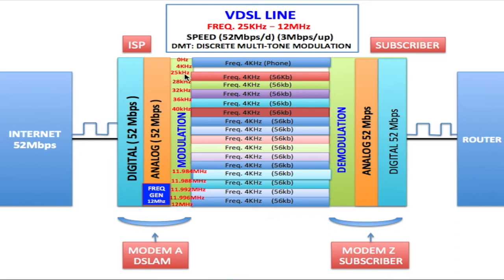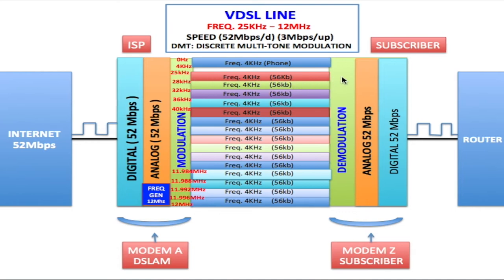From 25 kilohertz right up to 12 megahertz is used for your VDSL service. In each one of these 4 kilohertz channels, 56 kilobits of analog data is placed, and the 4 kilohertz frequency is used as the carrier for this data — from the modem at the ISP's end all the way to the modem at the subscriber's end. This is what we call modulation: your data has been modulated onto these 4 kilohertz channels and sent to the subscriber's modem.